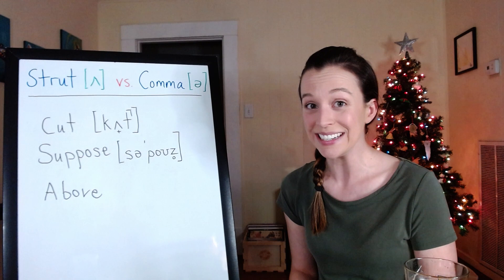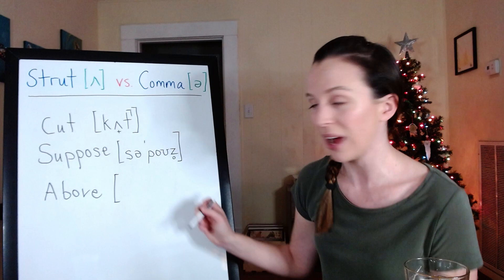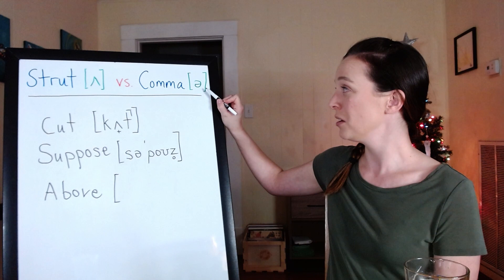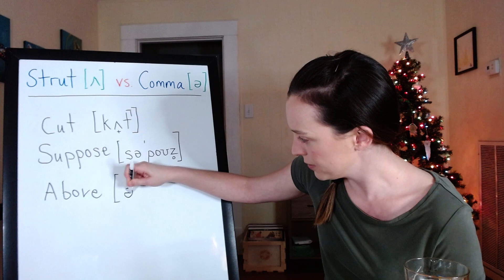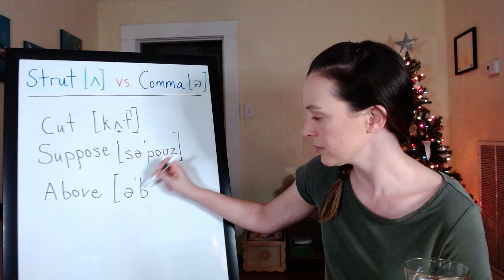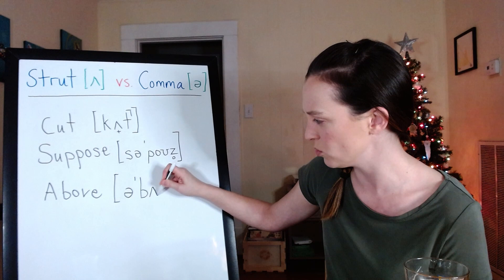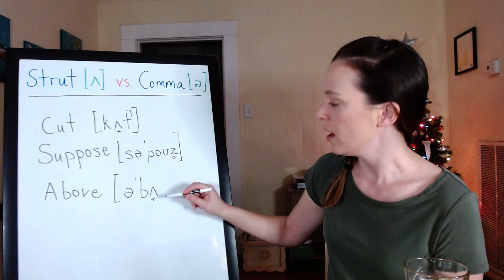So, we have our bracket. Above. Above. So, our first syllable is just a schwa. Uh. Stress mark. Buh. Uh. Schwa. No, not schwa. Strut. Advanced strut. Above.